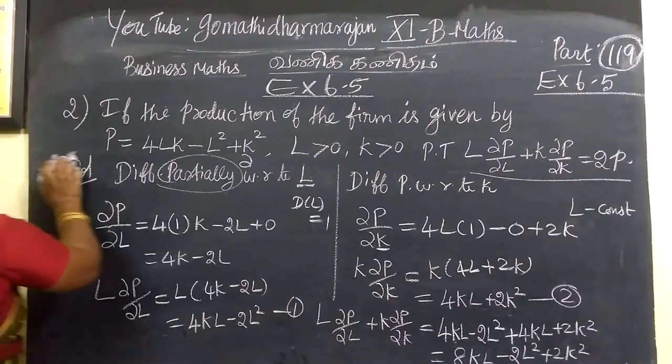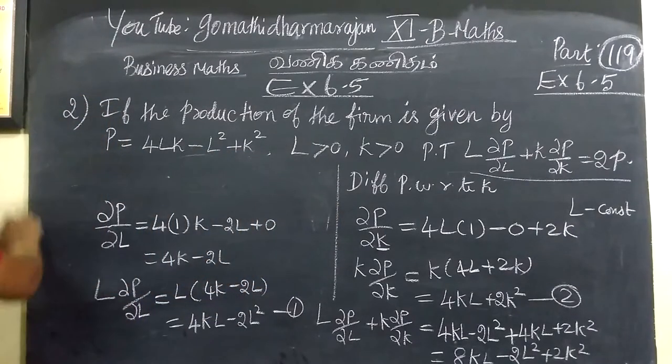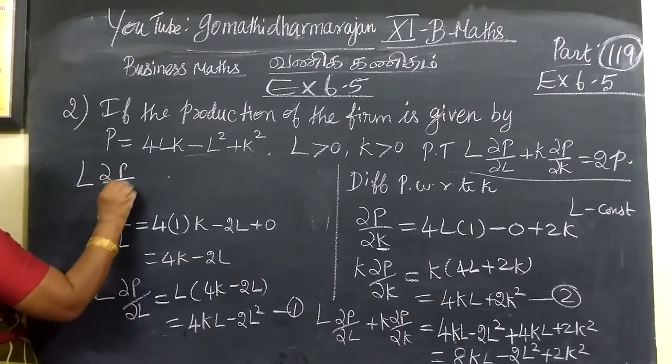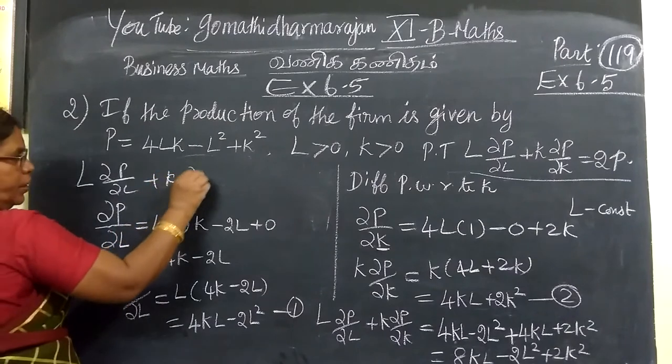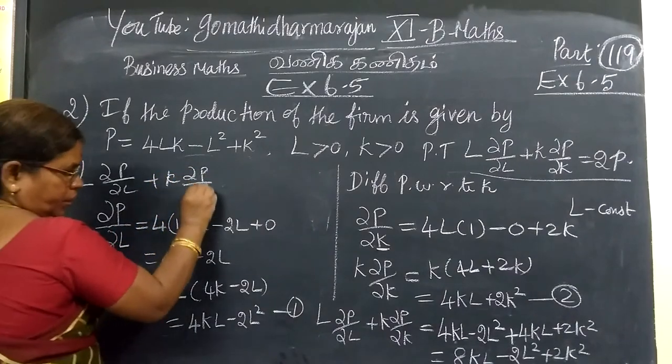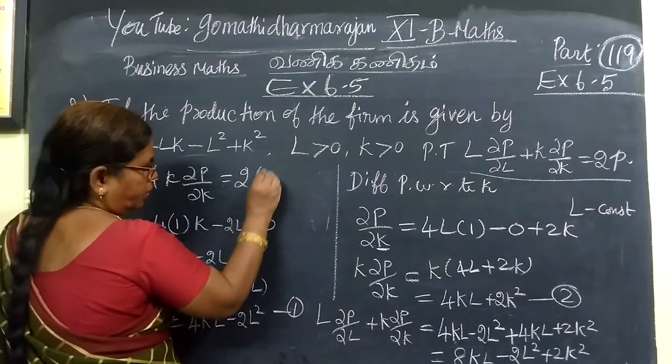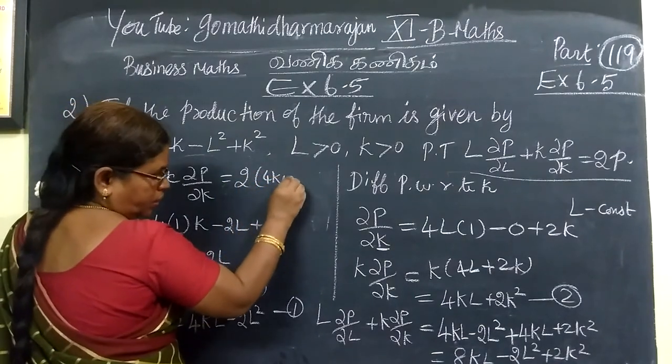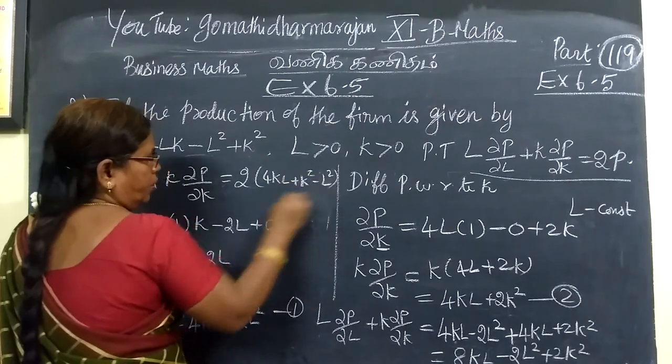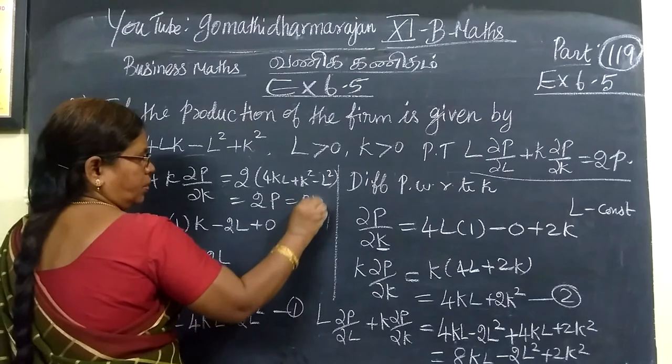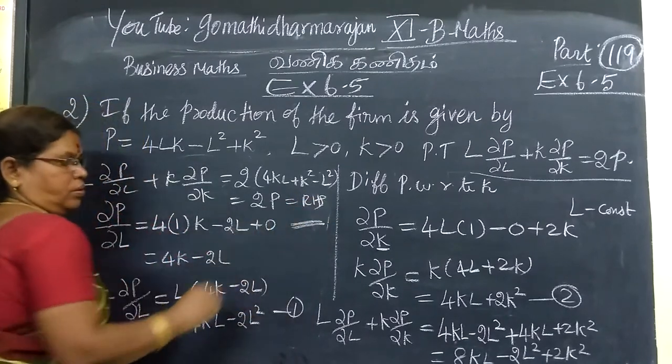Now L(∂P/∂L) plus K(∂P/∂K) equals 2 bracket 4KL plus K square minus L square. This equals 2P, as required.